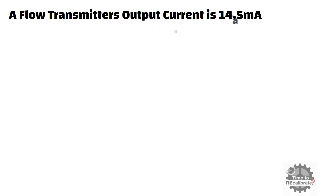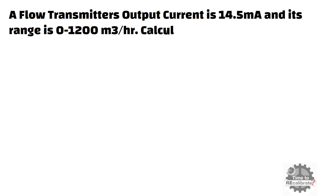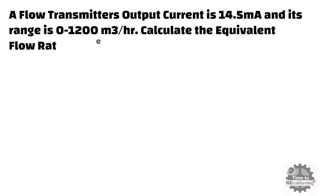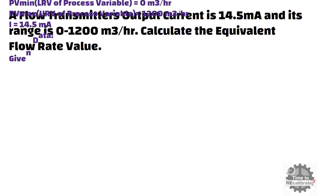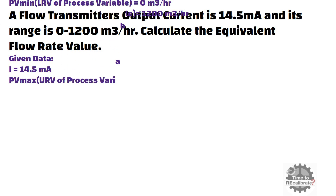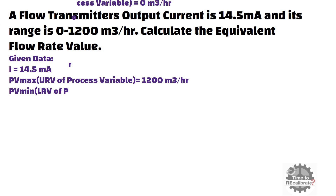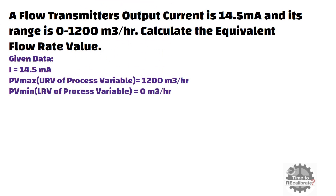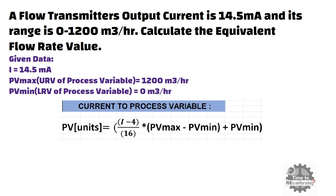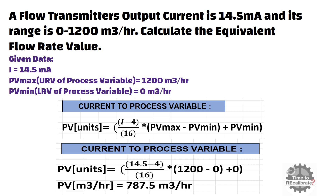A flow transmitter's output current is 14.5 milliamperes, and its range is 0 to 1200 cubic meters per hour. Calculate the equivalent flow rate value. The given data is: I = 14.5 milliamperes, PVmax = 1200 cubic meters per hour, and PVmin = 0 cubic meters per hour. Putting all these values into the equation and doing the math, you will get 787.5 cubic meters per hour. In other words, when current is 14.5 milliamperes, the process variable value is 787.5 m³ per hour.